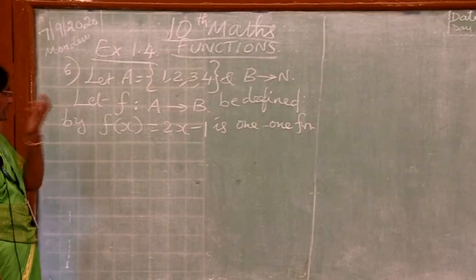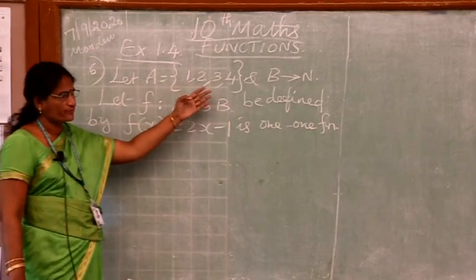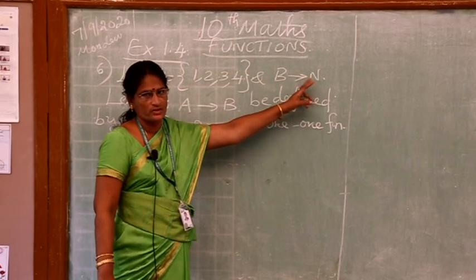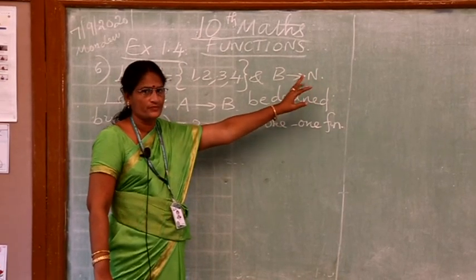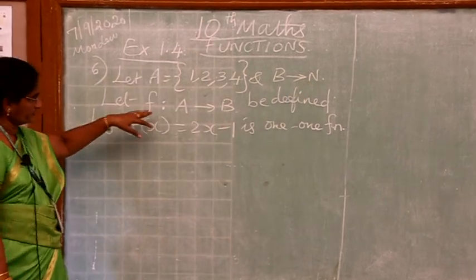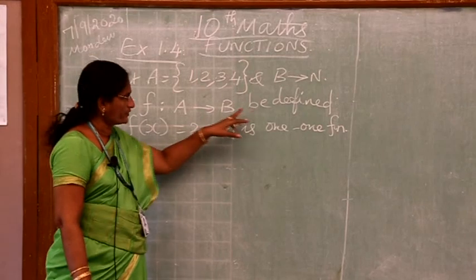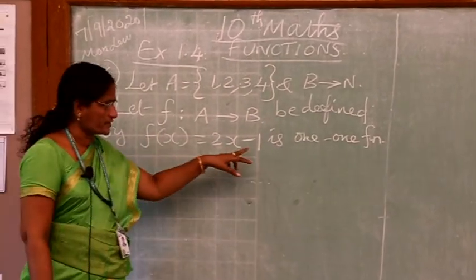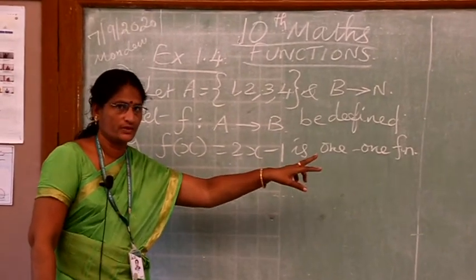See the sum is let A equal to 1, 2, 3, 4 and B to N. N stands for natural numbers, natural numbers you know starts from 1, 2, 3, etc. Let F such that A to B be defined by F of x equal to 2x minus 1 is one-one function.